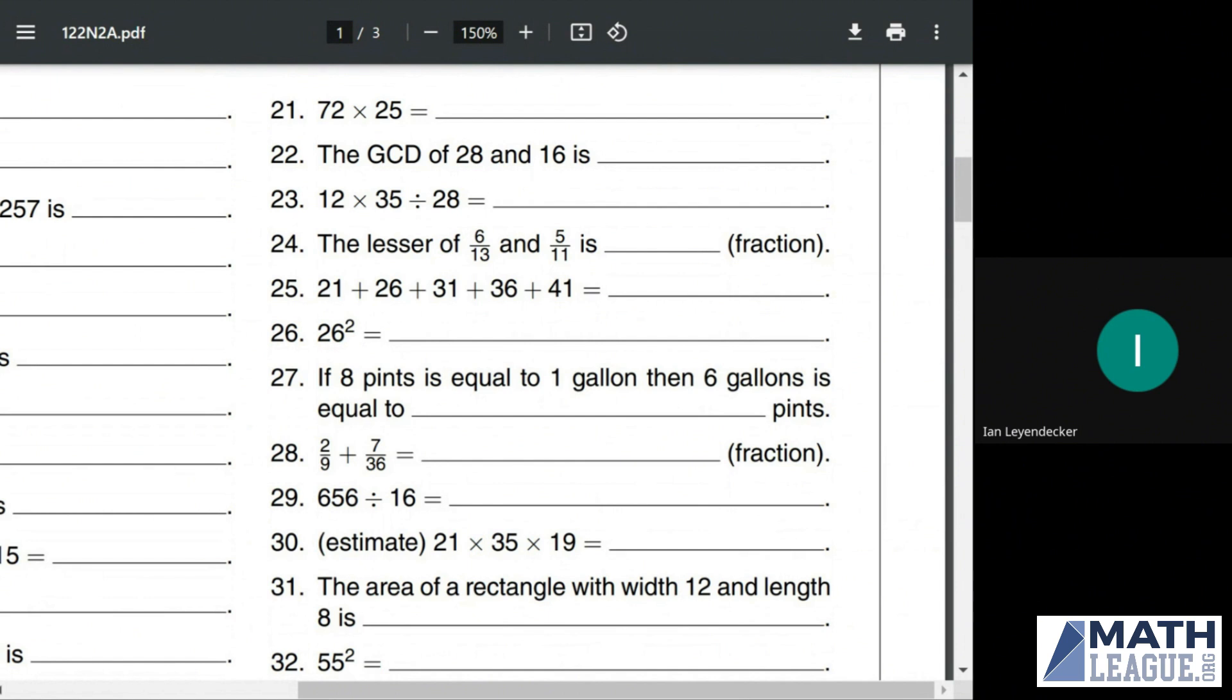72 times 25. 25, notably, is one-fourth of 100, and 72 is divisible by 4. So let's go ahead and divide 72 by 4, and we get 18 times 100 instead of 72 times 25. So that's going to be 1,800.